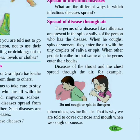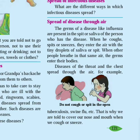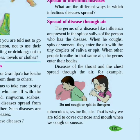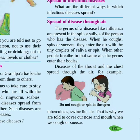Students, now let us see how diseases spread through air. The germs of a disease like influenza, or flu as we call it, are present in the spit or saliva of the person who has the disease when he coughs, spits, or sneezes. They enter the air with the tiny droplets of saliva or spit. When other people breathe in that same air, the germs enter their bodies.